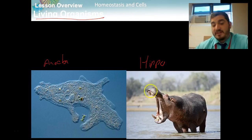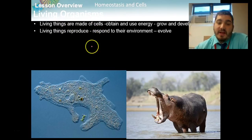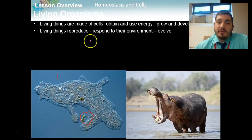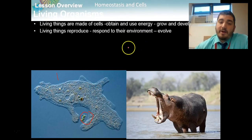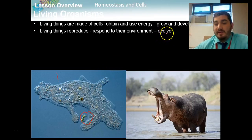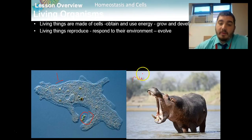Even though this hippo is a completely different multicellular organism with all different organs and organ systems, and this amoeba isn't, they're both very similar in the fact that they're both alive. They're both made of cells — this guy has one cell, this guy has millions. They both obtain energy; he's eating something right here, and this hippo eats grass. They grow and develop, they reproduce, they respond to their environment, and over long periods of time, they evolve into new organisms. So both unicellular and multicellular organisms follow characteristics of life — they are living organisms.